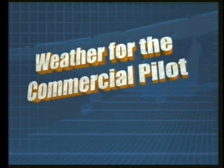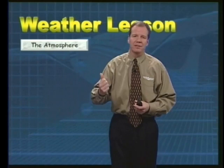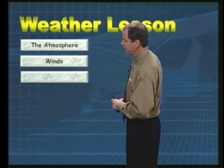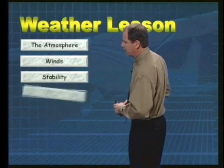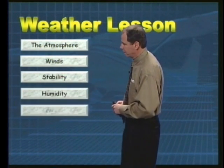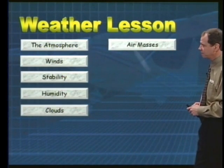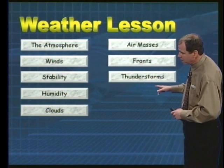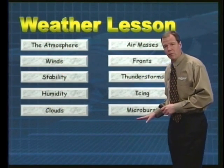Weather for the commercial pilot — here we go. Here are our lessons for this segment: first up, the atmosphere — what is the atmosphere, what are the percentages of gases like oxygen and nitrogen. Then winds, both at the surface and aloft. Stability of the atmosphere — what does this mean, what is a stable atmosphere. Humidity, clouds, cloud identification, air masses, fronts — cold front, warm front, occluded. Thunderstorms, icing, and last but never least, microbursts.